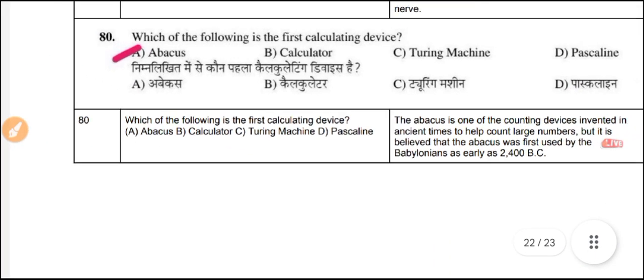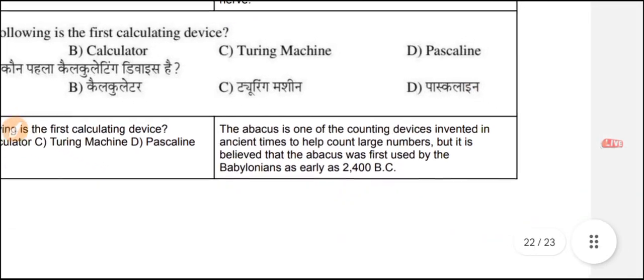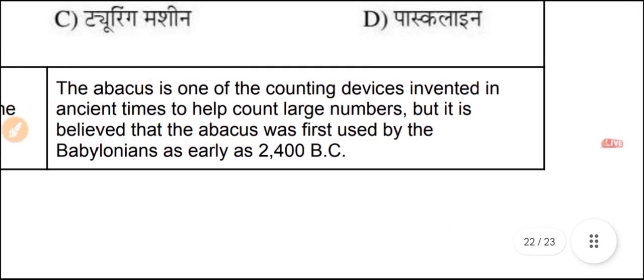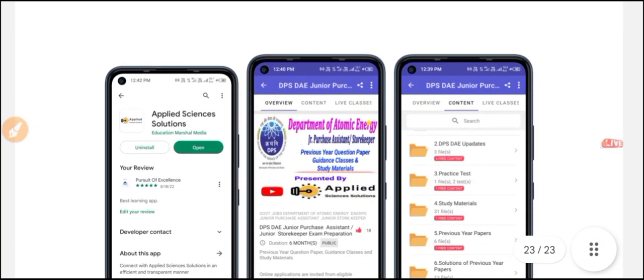Question 80: Which of the following is the first calculating device? This may seem like a computer question, but it is a science question — the answer is the abacus. The abacus is one of the earliest counting devices, invented in ancient times to help count large numbers. It is believed the abacus was first used by Babylonians around 2400 BC.